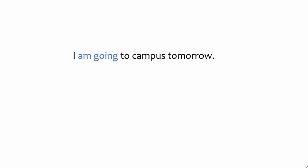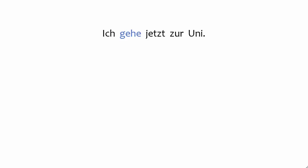One of the most important differences has to do with the location of the conjugated verb. In English, the conjugated verb usually comes right after the subject, even if the subject isn't the first word in the clause. In German, the conjugated verb is typically the second element in its clause, even if you start the sentence with something other than the subject.